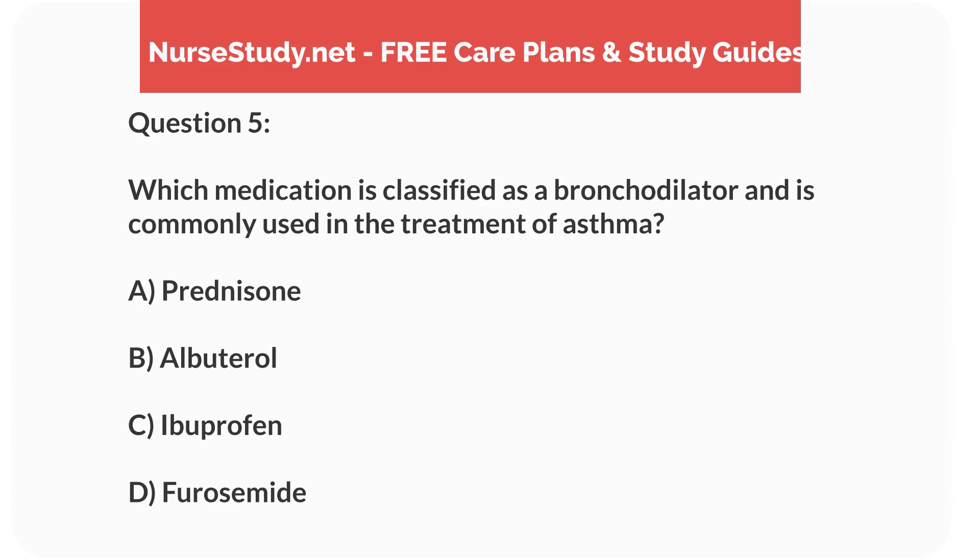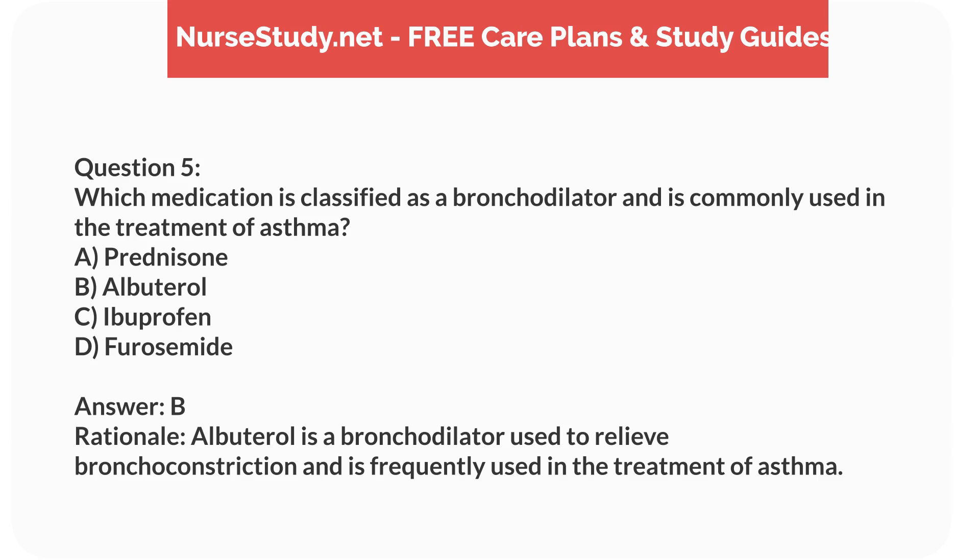Question 5. Which medication is classified as a bronchodilator and is commonly used in the treatment of asthma? A. Prednisone. B. Albuterol. C. Ibuprofen. D. Furosemide. Answer: B. Rationale: Albuterol is a bronchodilator used to relieve bronchoconstriction and is frequently used in the treatment of asthma.